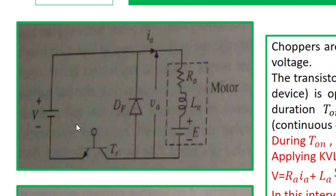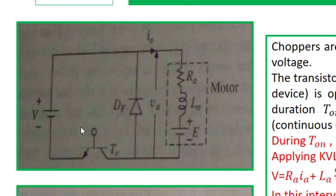Any switch generally has two modes of operation: either the switch is on or off. Based on that, the current and voltage of the complete circuit will change. When the switch is on, current will flow in this direction. This diode will get reverse biased. Now as the load is inductive, L is present, so based on the EMF developed across the circuit the armature current will increase.